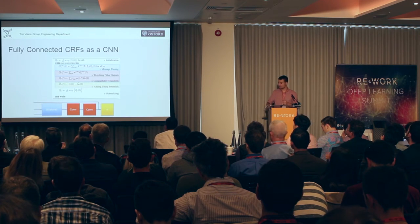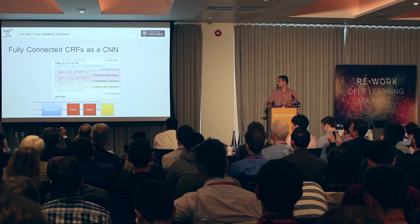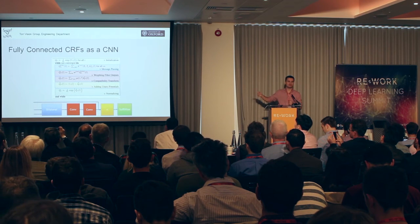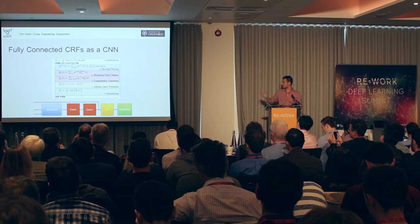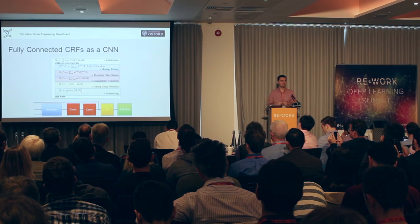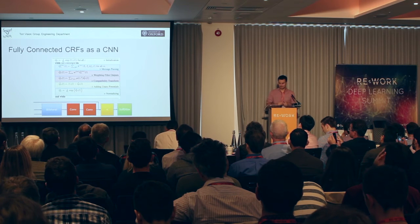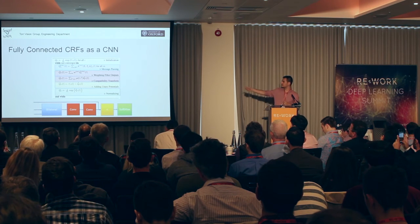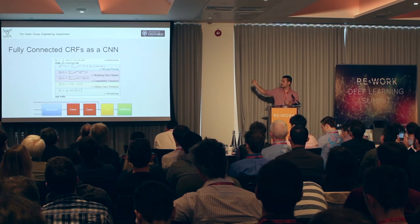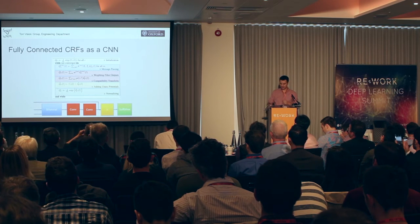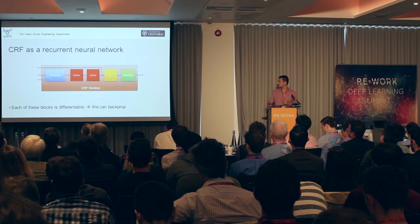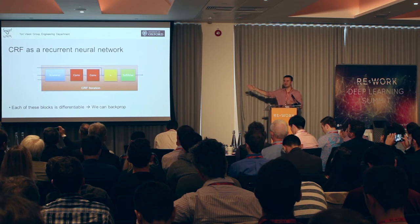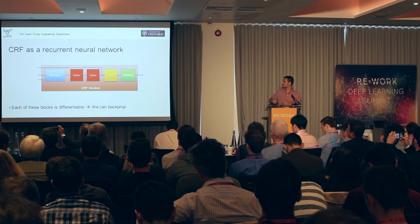Then we add the unary potentials, and finally there is a normalization step done using a softmax layer. This constitutes one iteration of the algorithm. We can put all this together in a random field iteration unit.